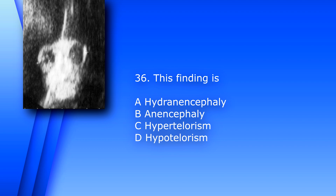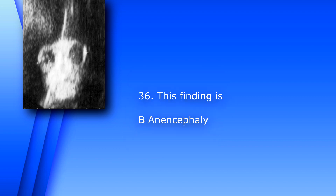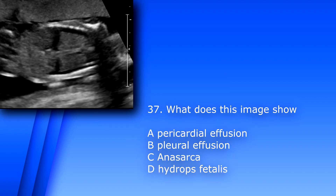Question 36: This finding is A) hydranencephaly, B) anencephaly, C) hypertelorism, or D) hypotelorism. You can see the typical frog appearance — there is no cranium and it is flat above the eyes. The answer is B, anencephaly.